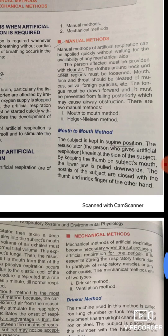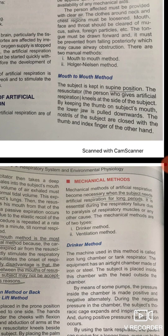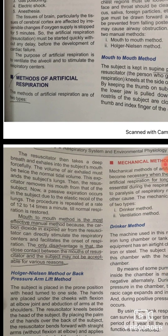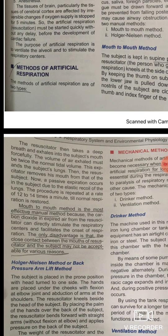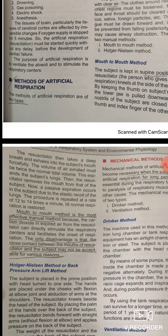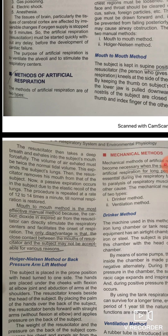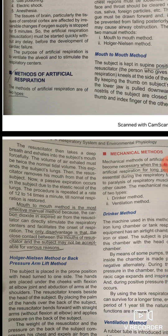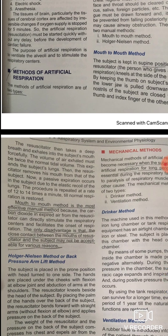The mouth-to-mouth method is performed by keeping the thumb at the subject's mouth and pulling the lower jaw downwards. The nostrils of the subject are closed with the thumb and index finger of the other hand. Mouth-to-mouth is the most effective manual method for artificial respiration. You open the mouth, clean it, and breathe into it.